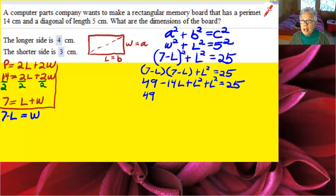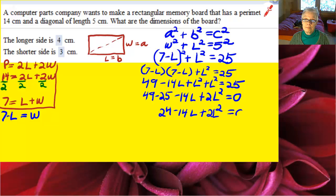Now I'll subtract 25 from both sides of the equation, add my like terms together and set the resulting quadratic equation equal to 0. That will give me 24 minus 14L plus 2L squared equals 0. Notice that each number is divisible by 2. I'm going to divide by 2 again to make my number smaller. That gives me 12 minus 7L plus L squared equals 0.